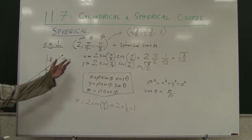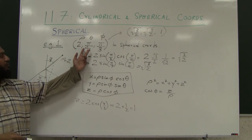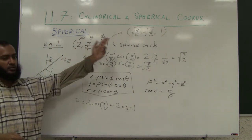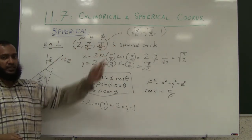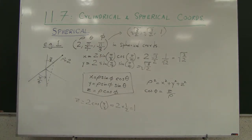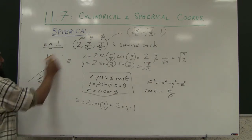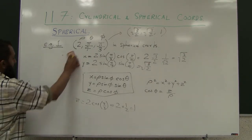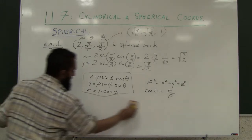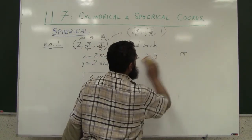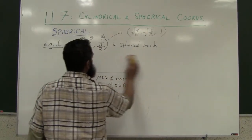So this is how we converted from the spherical to the rectangular coordinate system. Let's see if you can now do an example where we go the other way.